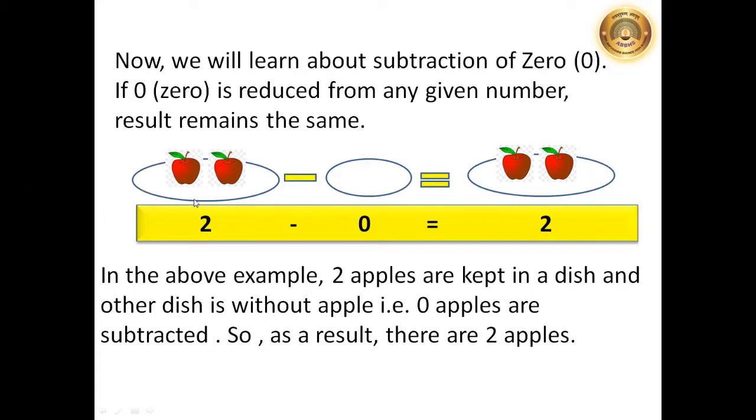You can see, in this dish, 2 apples are kept and this dish is empty. Means, no apple is kept in this dish. As a result, we have 2 apples in all.